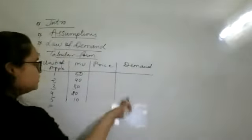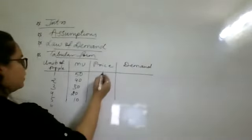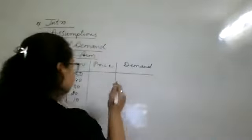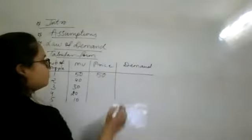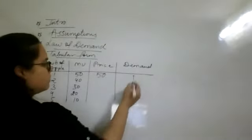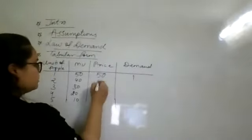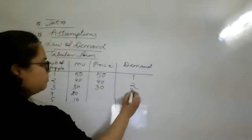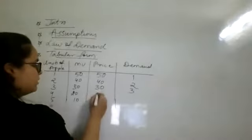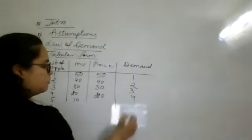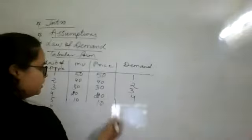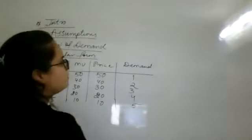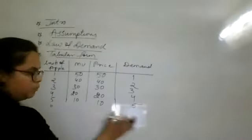Same as it is price and demand. We have also seen that price, for example, here in your book. So price is 50, demand is 1. Price is 40, demand is increased. Price is 30, demand is 3. Price is 20, demand is increased. Price is 10, demand is 5. So in this way, take this tabular form.